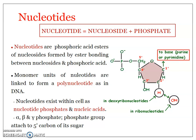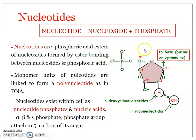So, pentose sugar binding with a nitrogenous base gives us a nucleoside, and when the nucleoside is bound with a phosphate molecule we get a nucleotide. A nucleotide can be defined as the phosphoric acid esters of nucleosides, because the phosphate molecule gets bound onto the fifth carbon of the pentose sugar through an ester bond — the five prime carbon bound through oxygen to the phosphorus. So a nucleotide is a phosphoric acid ester of a nucleoside, formed by ester bonding between a nucleoside and phosphoric acid.